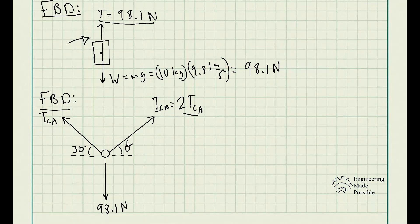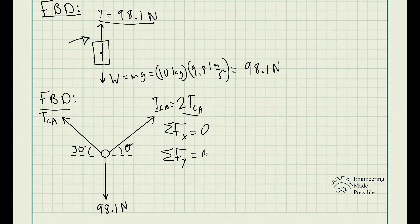We have all the forces on the ring, which is also in static equilibrium — it's not in motion, it's at rest. That means the sum of forces along the X direction must equal zero because it's not moving left or right, and the sum of forces along the Y direction must also equal zero because it's not moving up or down. Let's sum up all the forces in the X and Y directions.